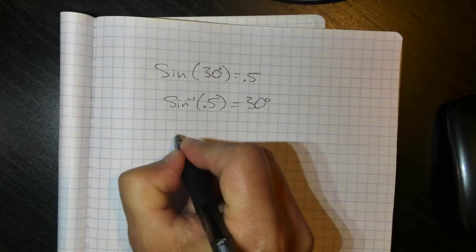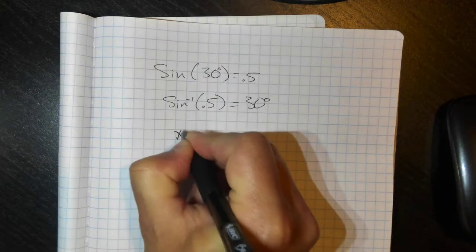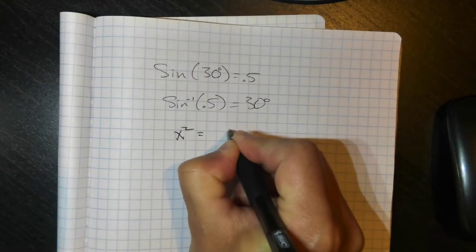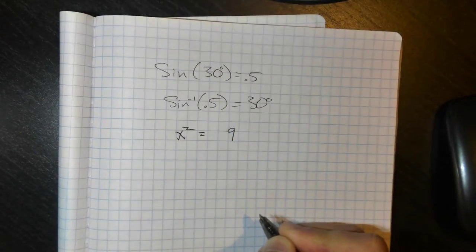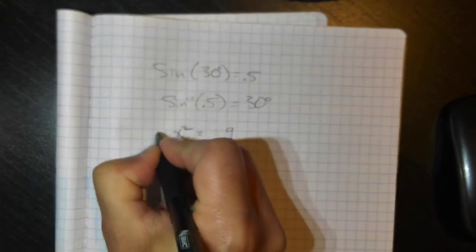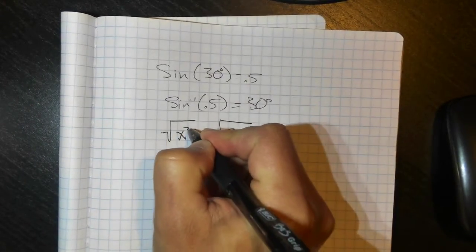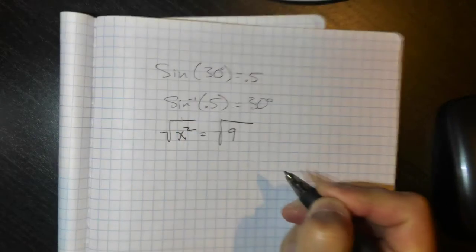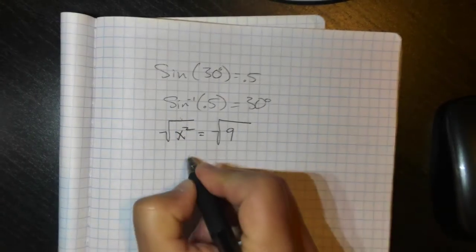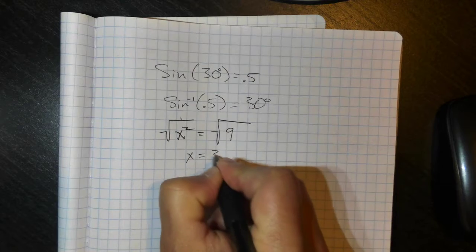If you think about squaring something, if I said that x squared is equal to 9, how would I cancel that out? I would square root both sides. The square root and the square cancel out. I unsquare the square, and I get that x is equal to 3.